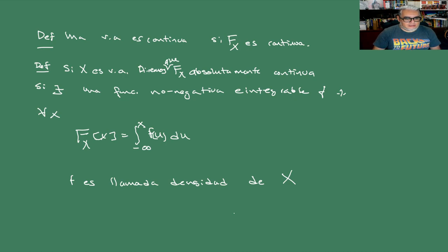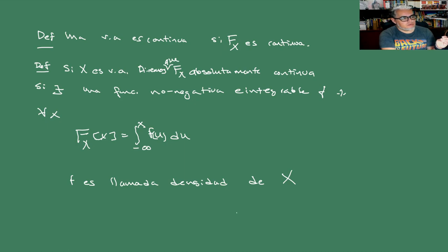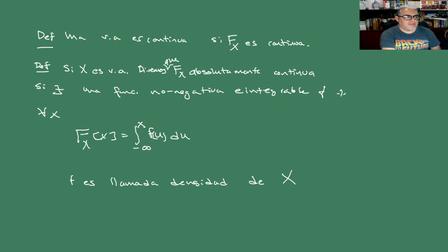Entonces, vamos a dejarlo aquí. La siguiente sesión vamos a empezar a explorar el concepto de que algo ocurra casi seguramente, que tiene que ver con la idea de espacios de medida en donde algo ocurre en casi todos los puntos, salvo en un conjunto de medida cero. Nos quedamos aquí con distribuciones y densidades, y nos vemos en la siguiente sesión.